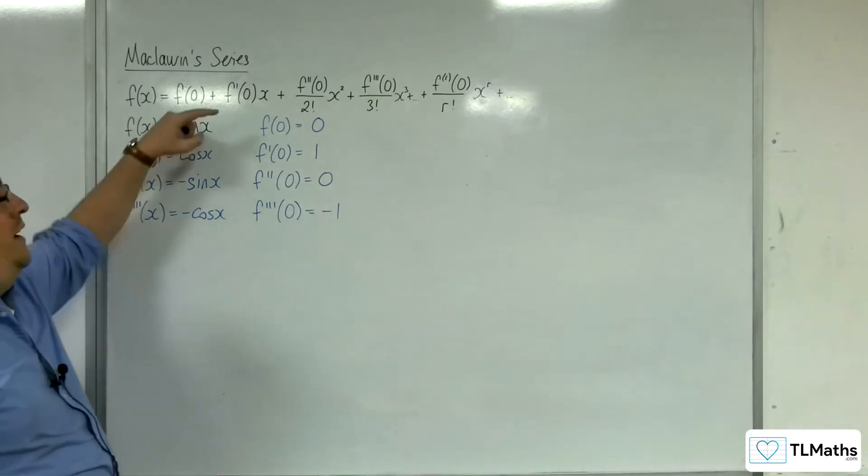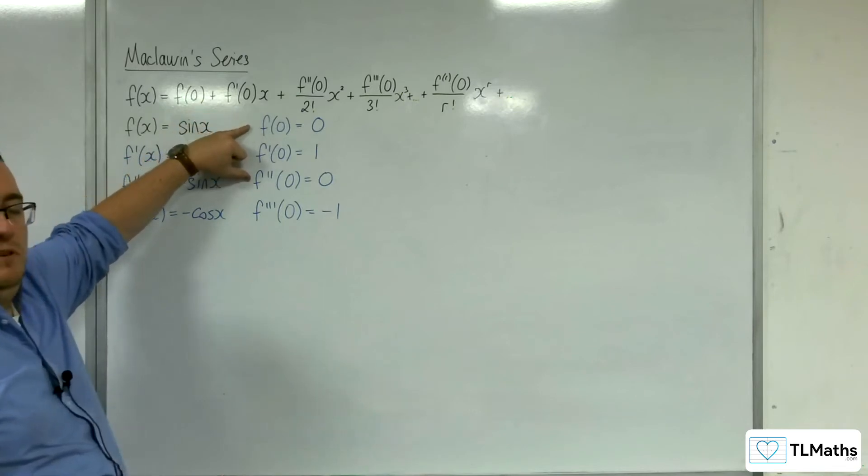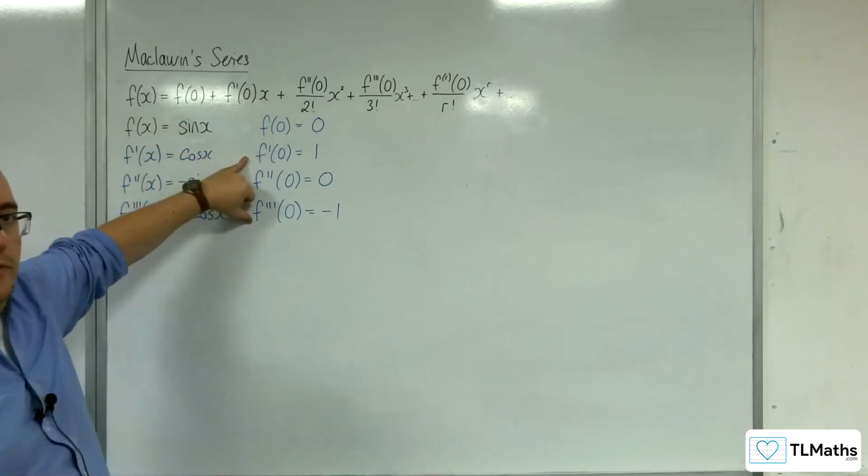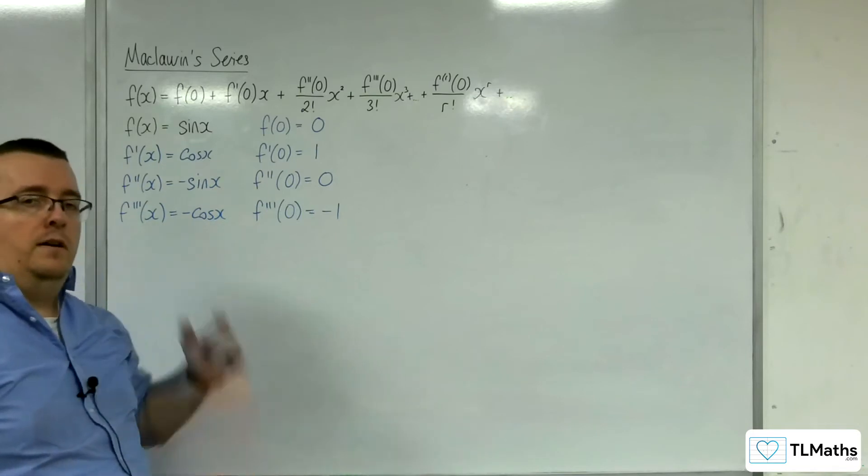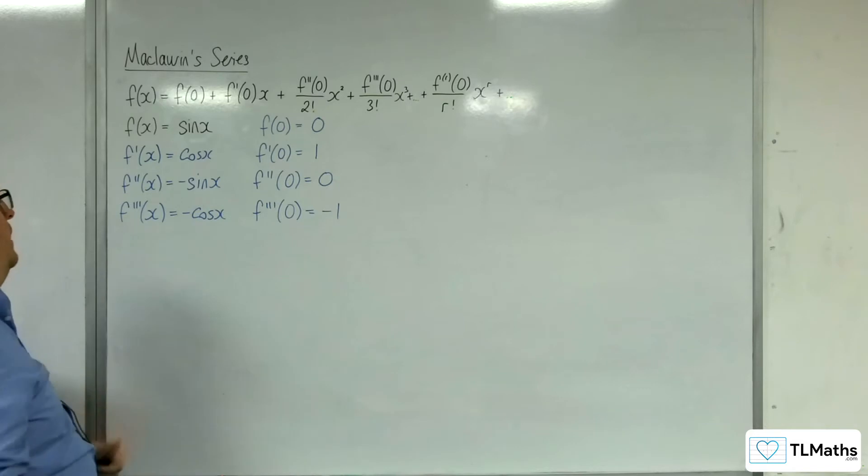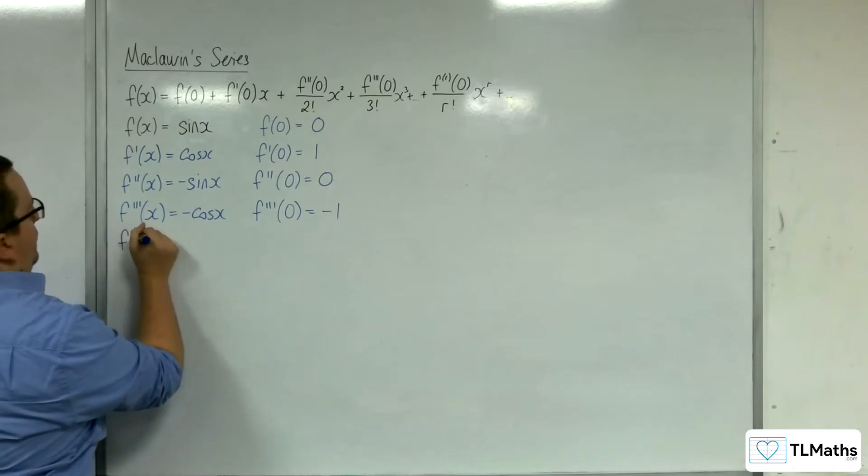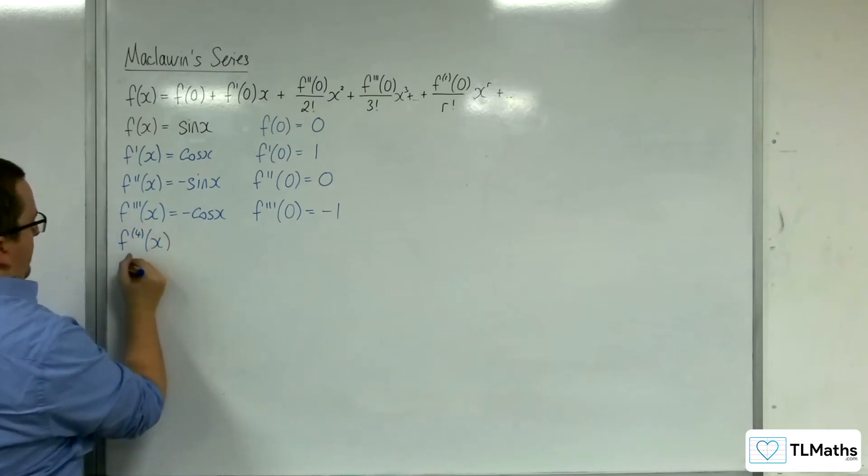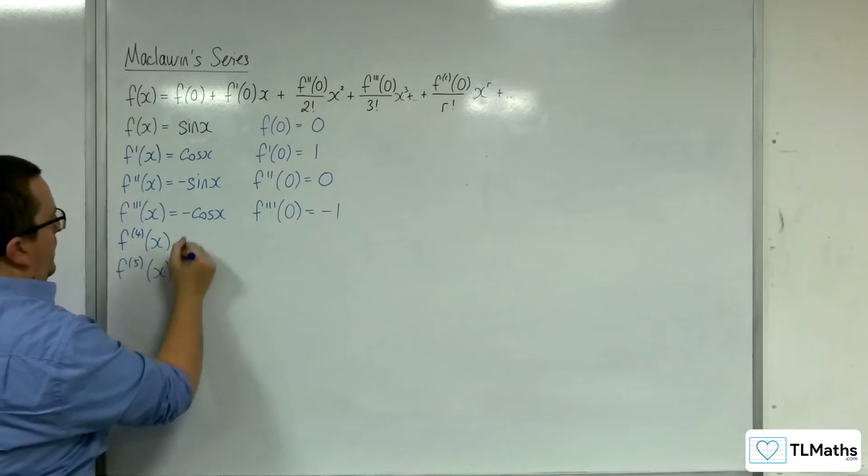Now, what this is actually telling you is that two of the terms are going to be zero immediately. So currently we've only got two non-zero terms in our expansion. So we might need to go a little bit further. So let's go to the fourth and fifth derivative and see what we're dealing with.